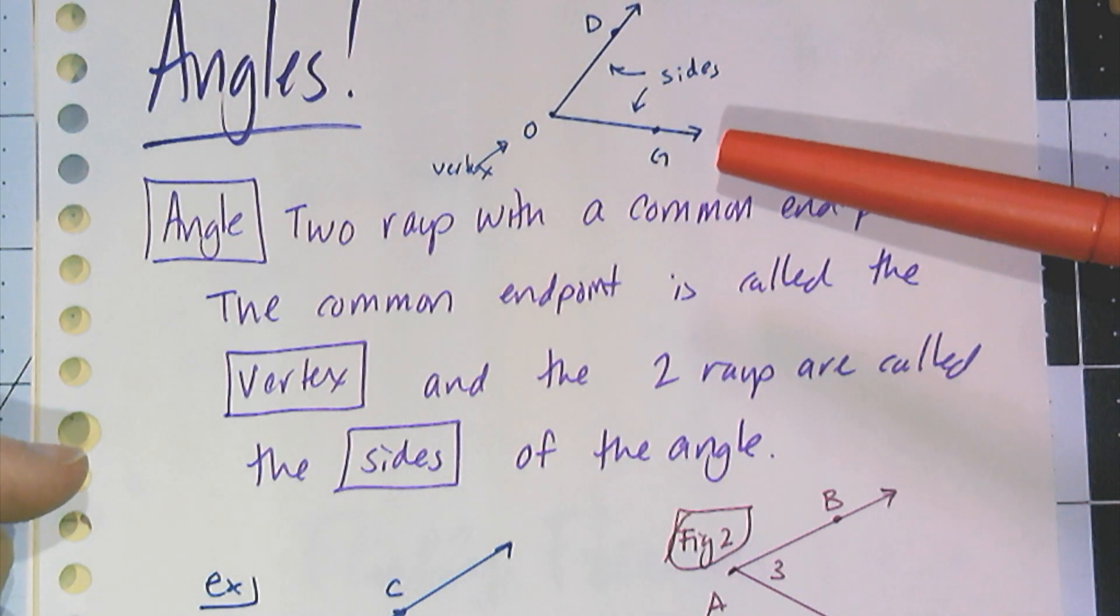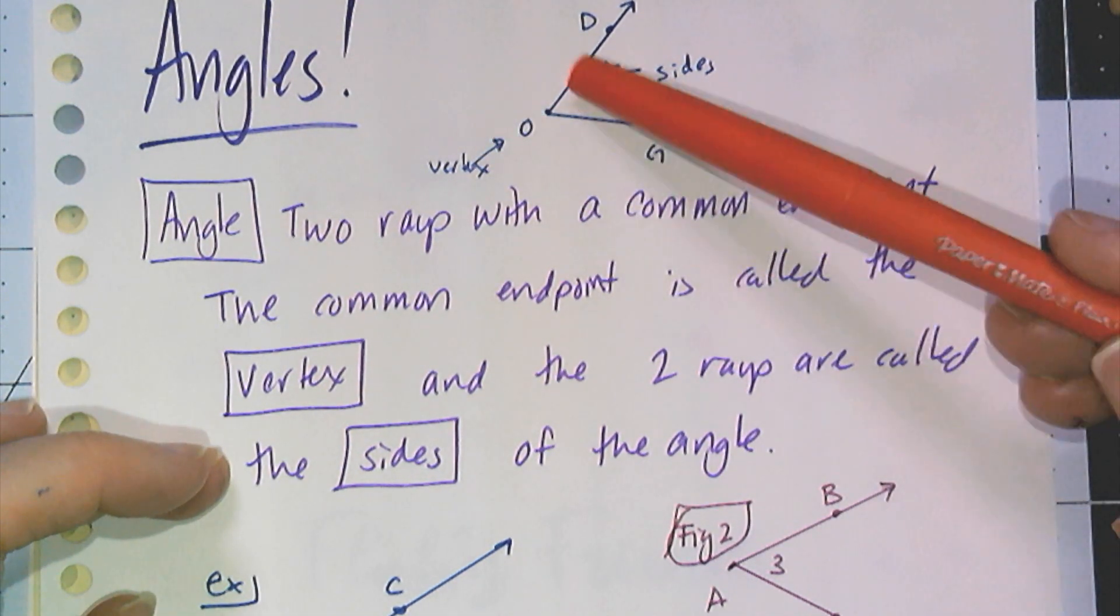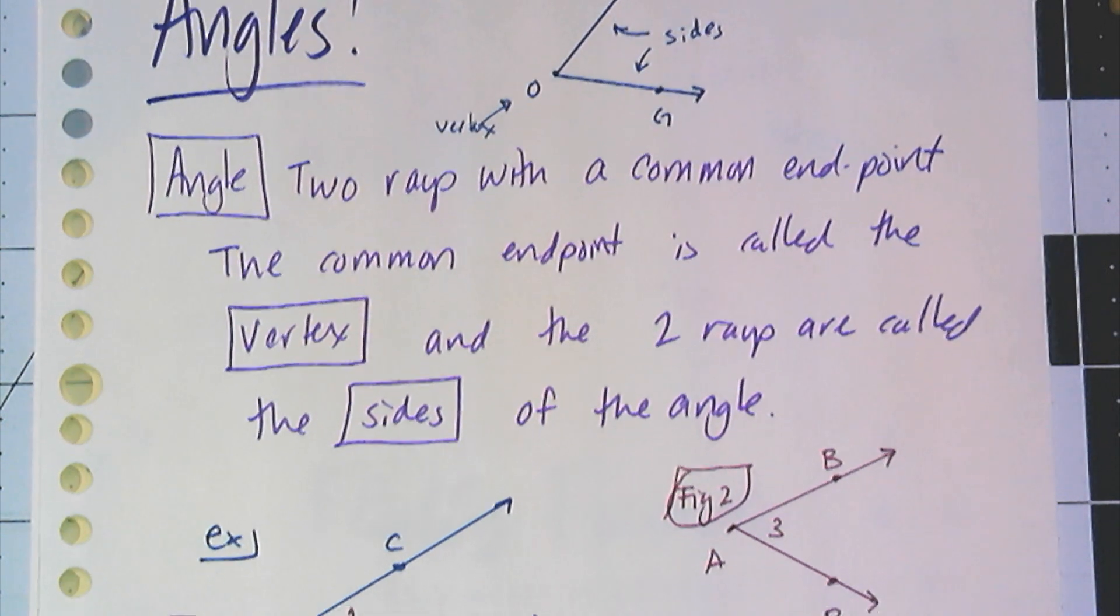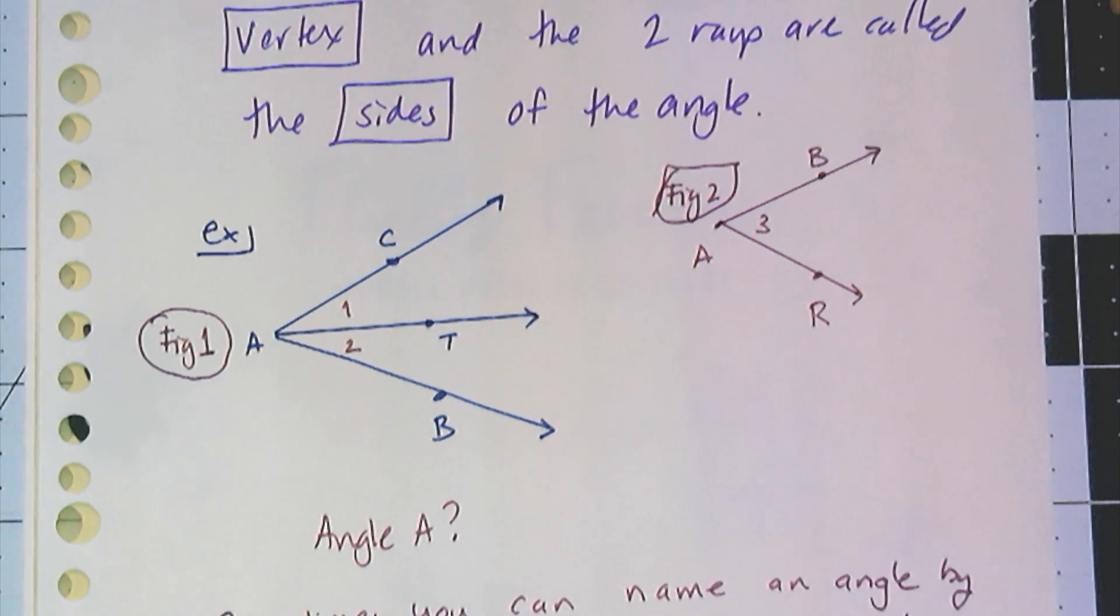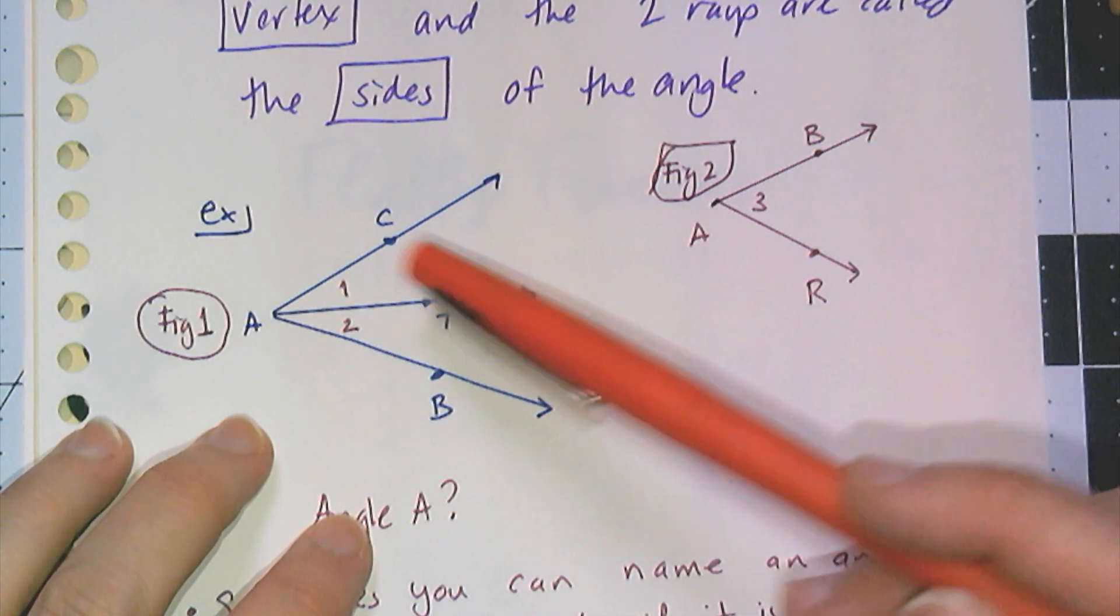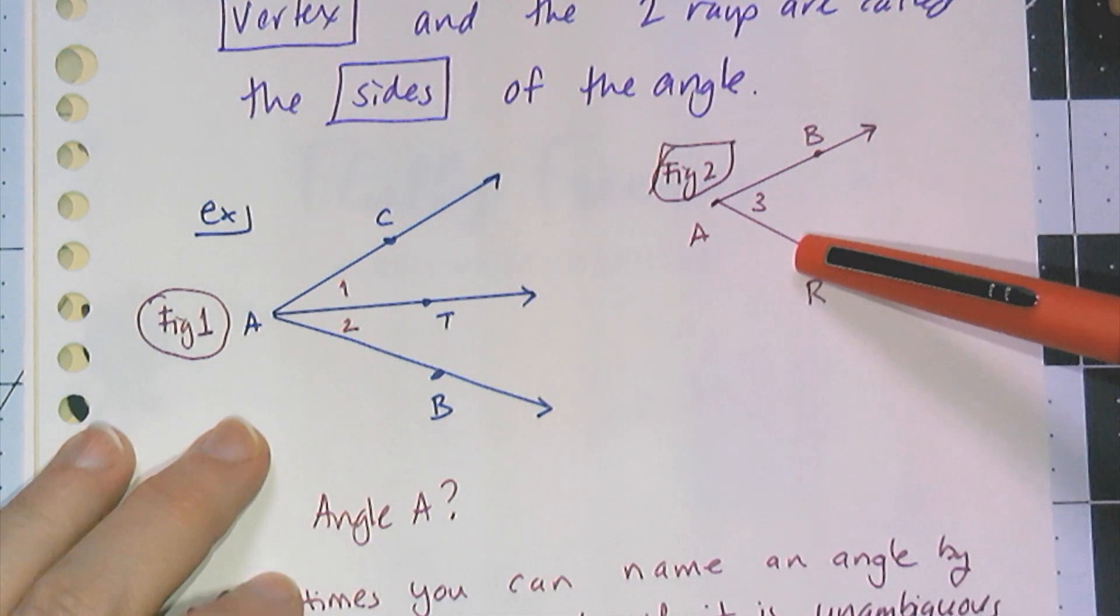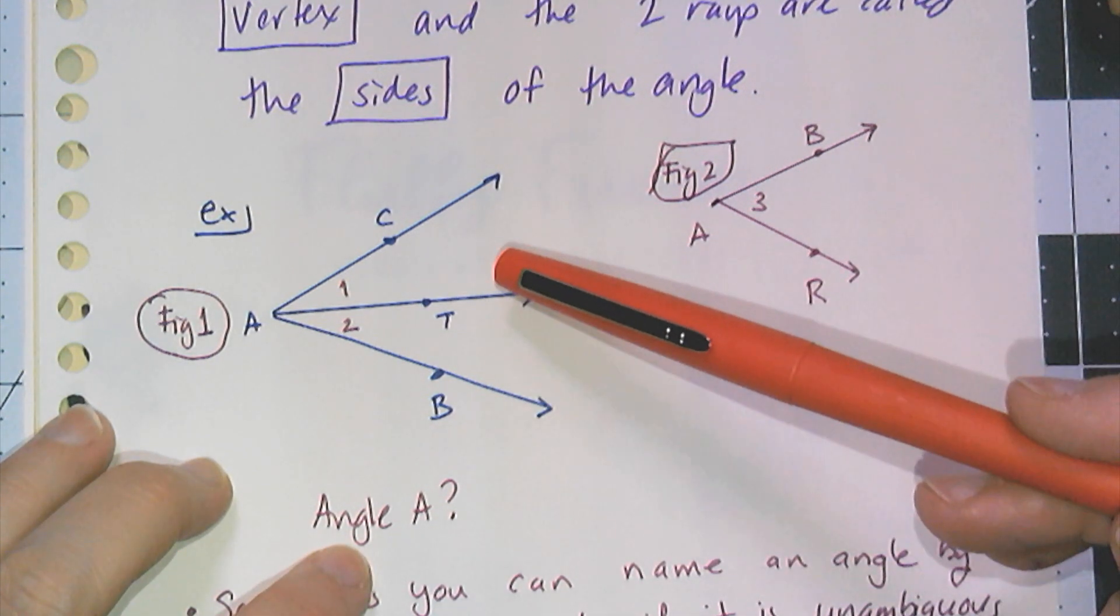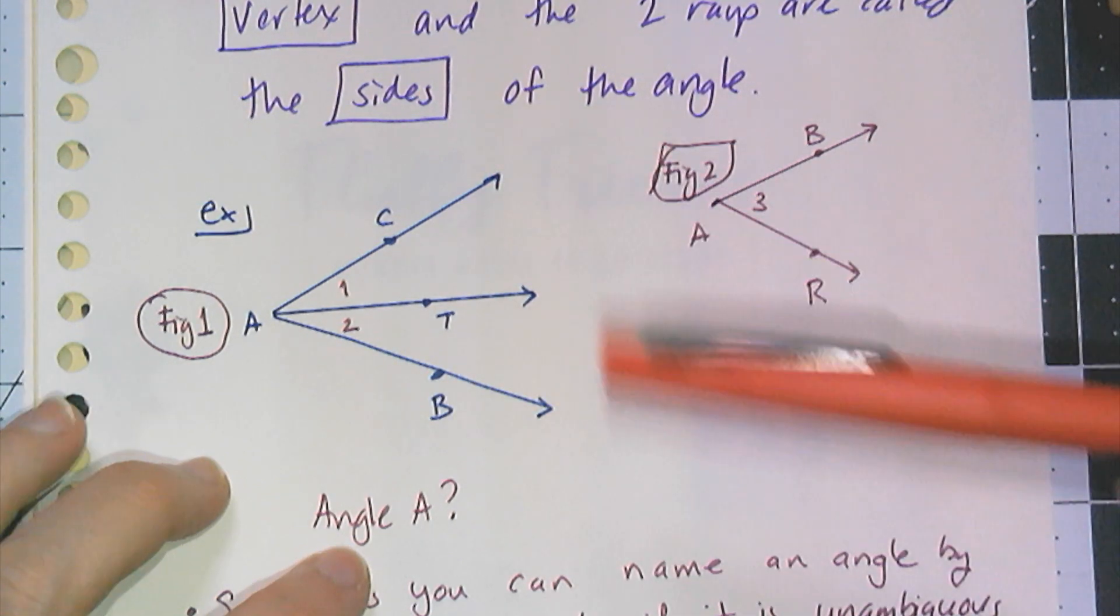Now when we name angles we like to focus on the vertex. That's the most important point of the angle. So we're going to name them sometimes using the vertex, but we have to be very careful. We can't always just use a single letter because look at these two cases. Figure one, I have these three rays that all share the vertex A, and here I have two rays that share the vertex A. So if I asked you what angle A was in this figure, can you tell me specifically what angle I mean? Do I mean this small angle, this small angle, or that bigger angle? It's ambiguous, and because of this complexity in this figure I cannot name the angle by a single letter.